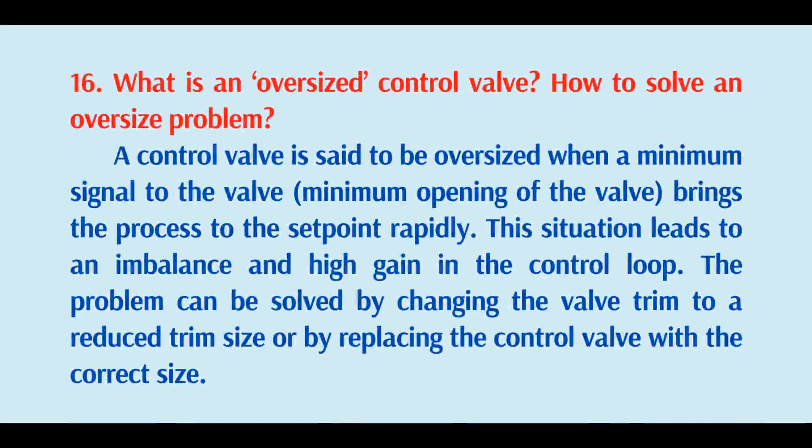What is an oversized control valve and how to solve an oversized problem? A control valve is said to be oversized when the minimum signal to the valve — minimum opening of the valve — brings the process to the set point rapidly. This leads to imbalance and high gain in the control loop. The problem can be solved by changing the valve trim to a reduced trim size or by replacing the control valve with the correct size.